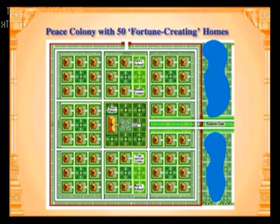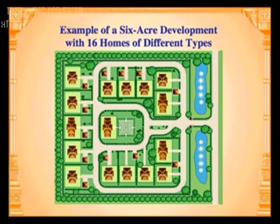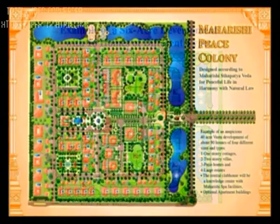The minimum land requirement is 10 hectares or 25 acres; if lakes and a forest buffer are included, then 15 hectares or 37 acres would be more appropriate. This is a similar but much smaller example of a six-acre development with 16 homes. Wherever possible, the community is surrounded and protected by evergreen hedges and rows of beautiful trees, and only non-polluting electric or hybrid cars will be allowed inside the development.